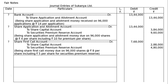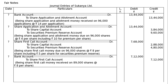Next entry: Bank Account debited to Share First Call Account. Being share first call money received on 89,000 shares at ₹8 per share, since Rohit holding 7,000 shares could not pay the first call. Amount: ₹7,12,000 each side.